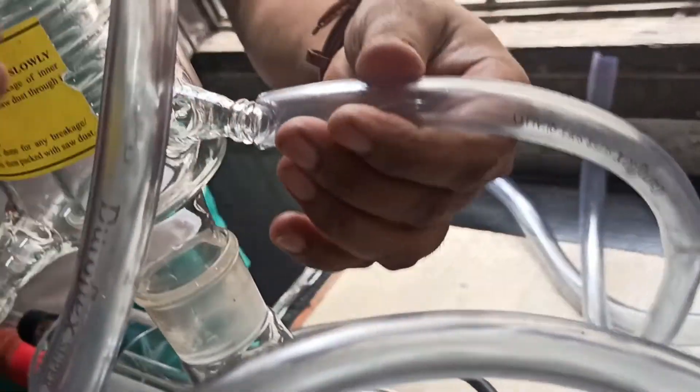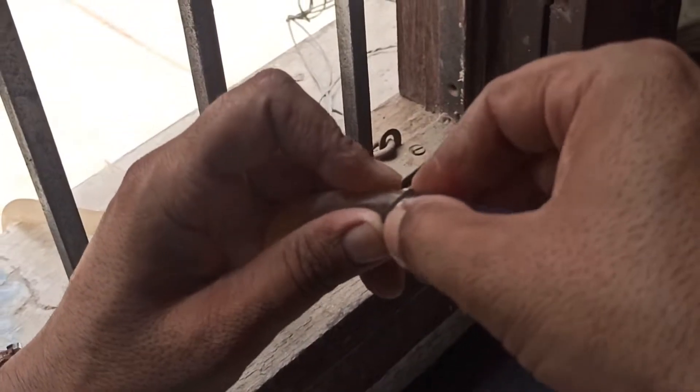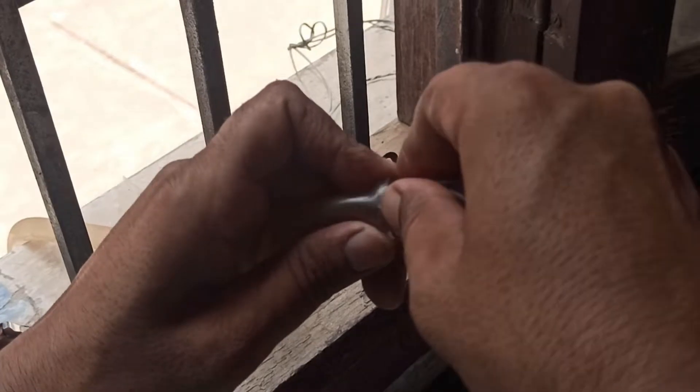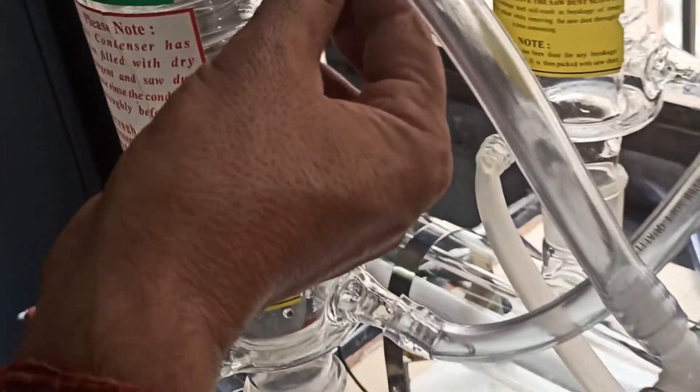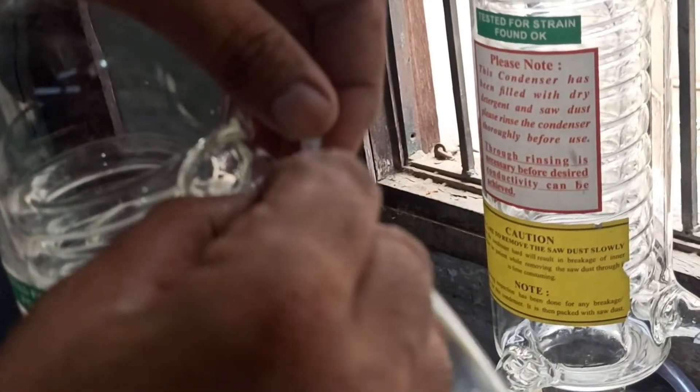Connect the inlet water supply to the inlet point of the first stage condenser. Connect all the PVC pipe points with the tie locks.